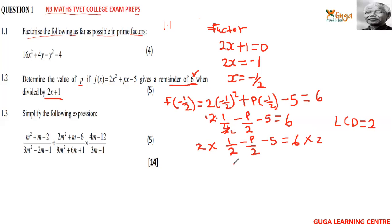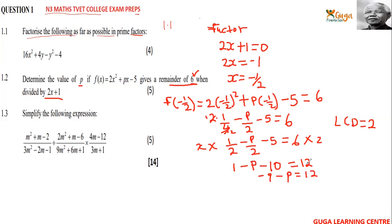We're left with 1 from the first term; this 2 and 2 cancel from negative p/2, leaving minus p; and minus 5 multiplied by 2 gives minus 10, which equals 12. So: 1 minus 10 gives negative 9, giving us negative 9 minus p equals 12.